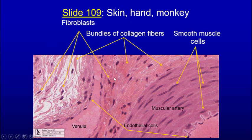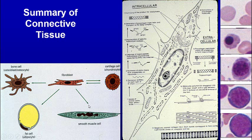Here we can see fibroblasts and bundles of collagen between these smooth muscle cells, and we can see the internal elastic lamina as well. These are endothelial cells.